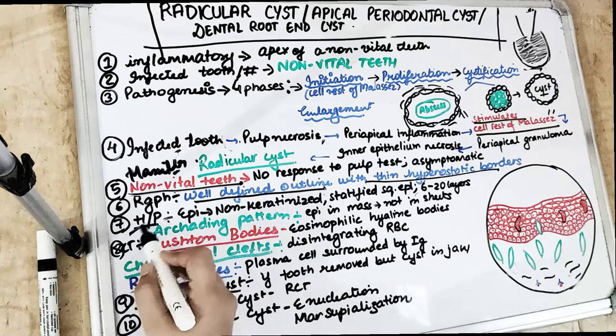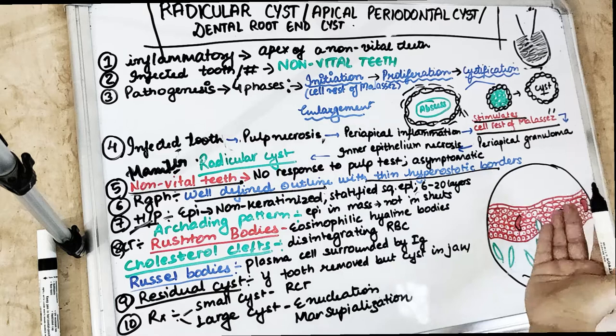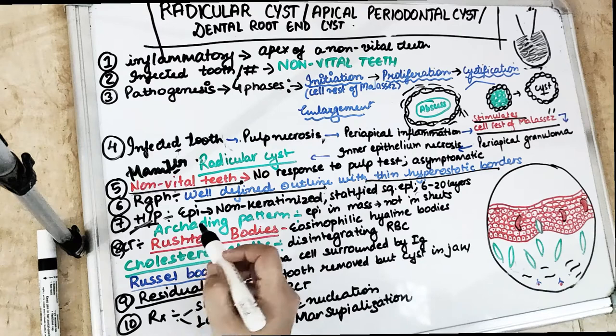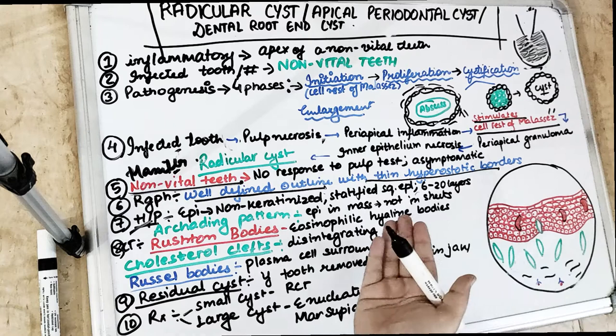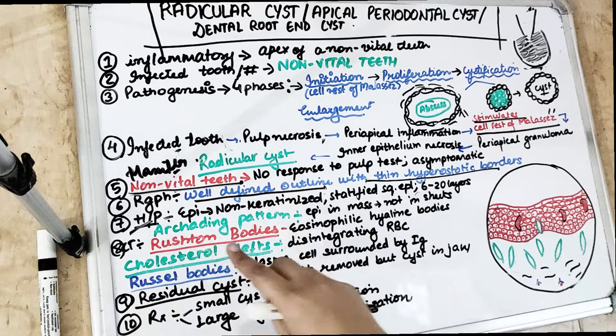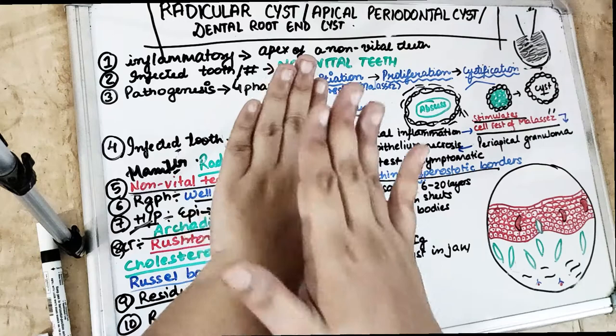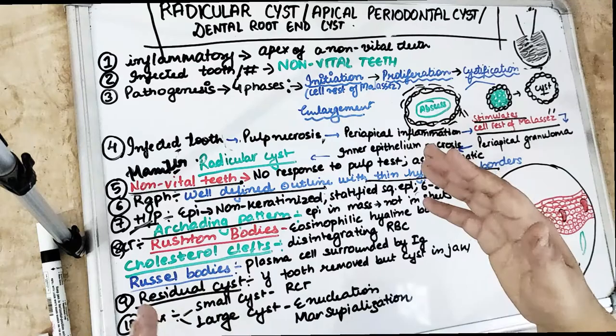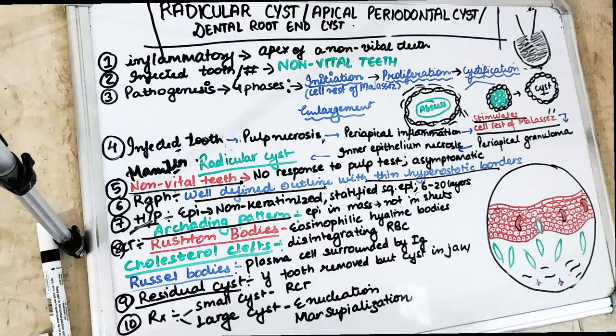Histopathologically, the epithelium is non-keratinized stratified squamous epithelium, with a thickness of 6 to 20 layers. Sometimes because of inflammation the epithelial lining may discontinue or disrupt. A characteristic feature is the arcading pattern of the epithelium — instead of proliferating into sheets, the epithelial cells proliferate in different planes, forming masses or clusters rather than sheets, with cores of connective tissue extending into the epithelial mass from all directions.